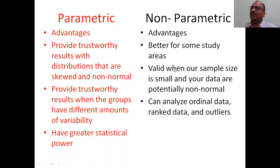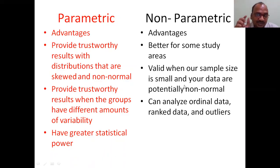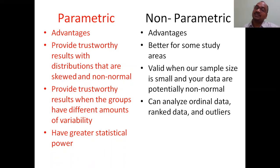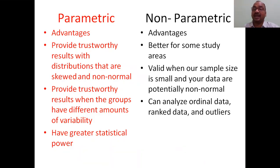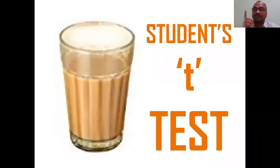Non-parametric tests are better for some study areas. They are valid when the sample size is small. They are valid when the population distribution is potentially non-normal. They can also analyze ordinal data, ranked data, and data with outliers. You need to know only the advantages for examination purposes.